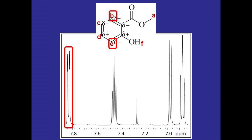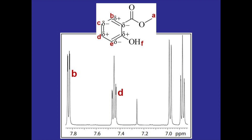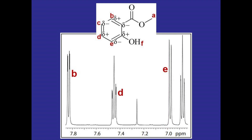Then we look at this triplet and recognize it has to be coming from either hydrogen C or D. Since hydrogen D is attached to a carbon with a partial positive charge, it would be more deshielded, so this signal would be for hydrogen D. That means the remaining doublet would be for hydrogen E and the remaining triplet would be for hydrogen C. Don't forget to label the little singlet around 7.3 ppm — this would be for the solvent, in this case CDCl₃.